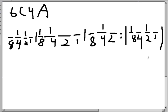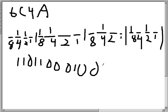So now we have the binary number: 1, 1, 0, 1, 1, 0, 0, 0, 1, 0, 1, 0. That's the binary of 6C4A.